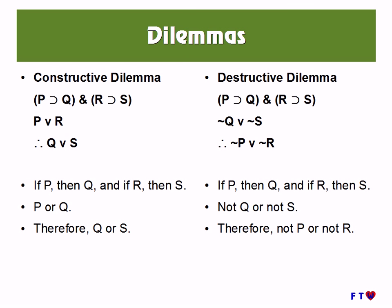Now we turn to dilemmas. With a constructive dilemma, we begin with the conjunction of two conditionals. We are then told that the antecedent of one of those conditionals is true — that is, P or R, the disjunction of their antecedents. And we can conclude that one of the consequents is true, so we conclude the disjunction of their consequents.